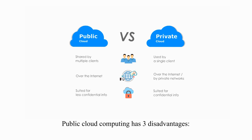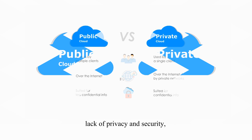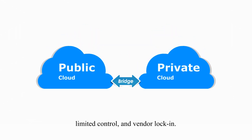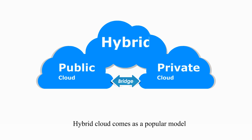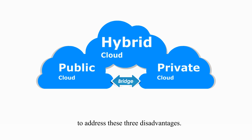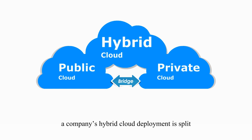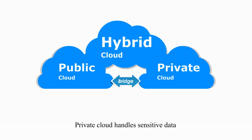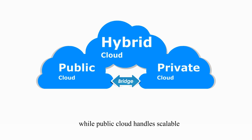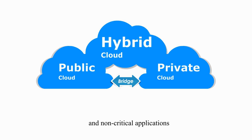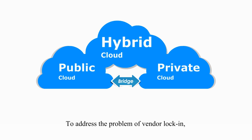Public cloud computing has three disadvantages: lack of privacy and security, limited control, and vendor lock-in. Hybrid cloud comes as a popular model to address these three disadvantages. In this model, a company's hybrid cloud deployment is split between the public cloud and private cloud. Private cloud handles sensitive data and critical applications, while the public cloud handles scalable and cost-effective infrastructure, and non-critical applications with no sensitive data involved.